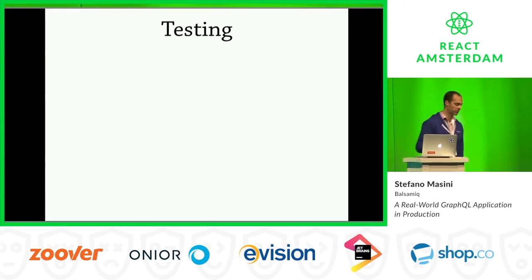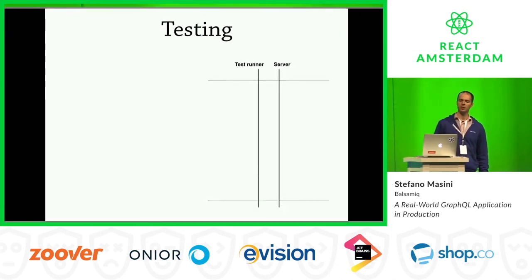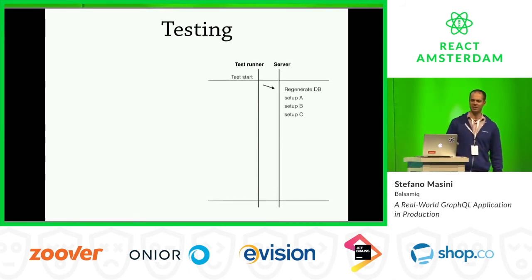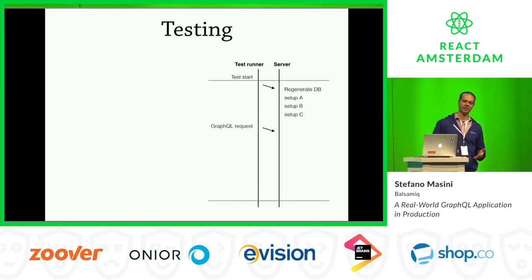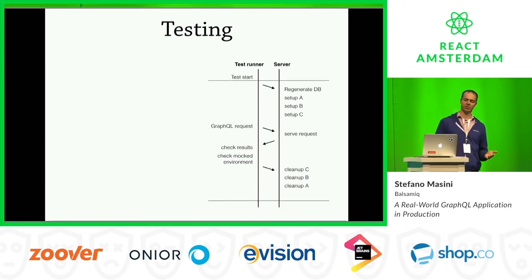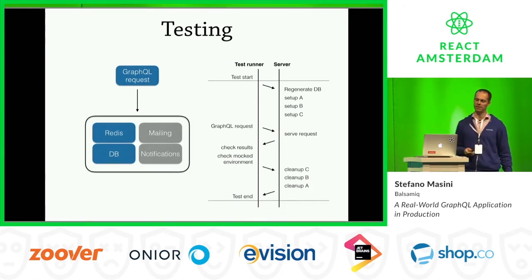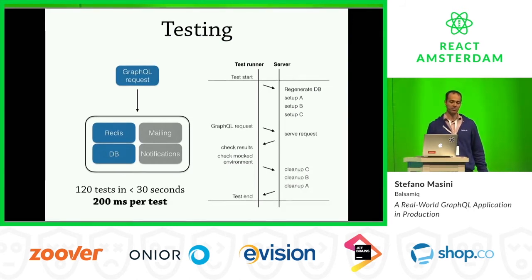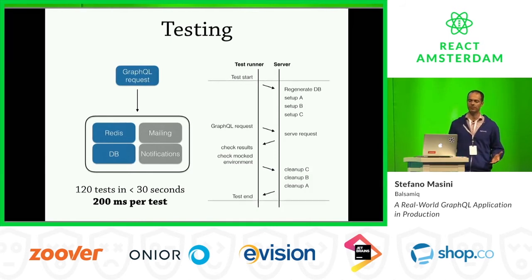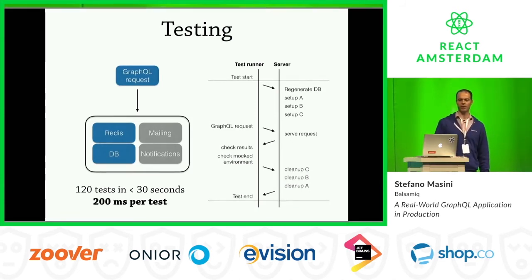A couple of words about testing — something we're really happy about and think GraphQL is really well-suited for. Our tests look very simply like this: the test starts, we regenerate the whole database on a local real instance, go through setup phases, then send a GraphQL request, the server answers, we check the results, then go through cleanup — destroy the database and go on with the next test. This could be expensive, as it goes through an actual database with real code hitting real database and real cache. We only mock external services like sending emails or notifications because we don't care about testing those APIs. But this only runs in 200 milliseconds per test, and we have 120 tests that run in less than 30 seconds. For integration testing, this is really good.